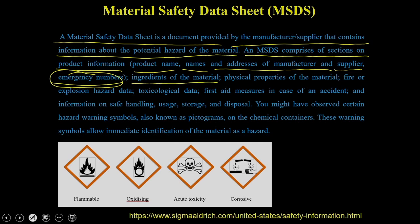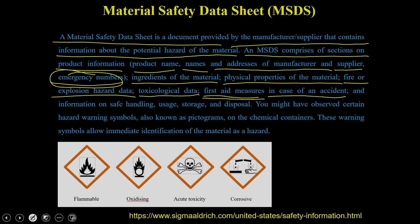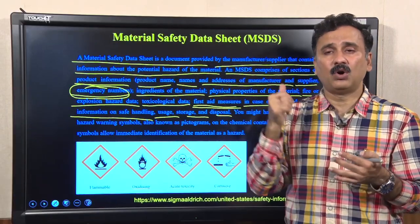The MSDS will tell you the ingredients of the material, its physical properties, and fire or explosion hazard data — whether the material will catch fire or is explosive. It also provides toxicology data including the toxicology exposure limit and the LD50 of that particular material, first aid procedures in case of burns or exposure, and information on safe handling, usage, storage, and disposal. All the information required before using a chemical is provided in the material safety data sheet, or MSDS.